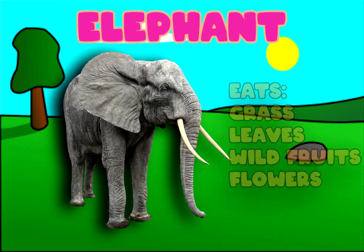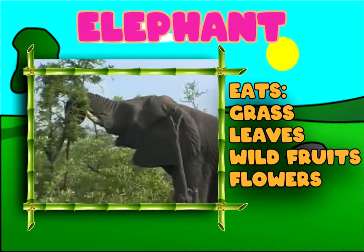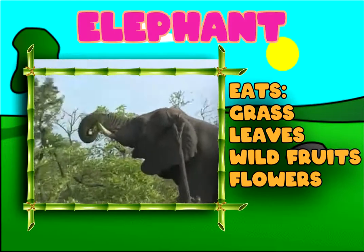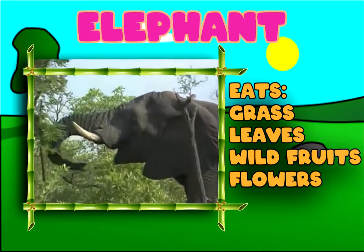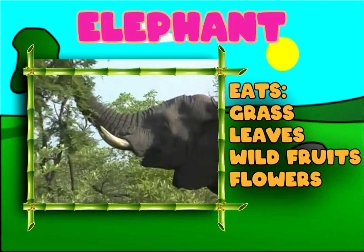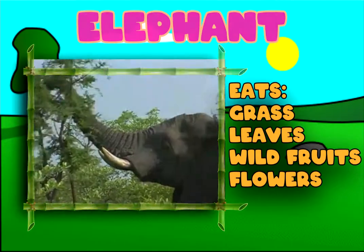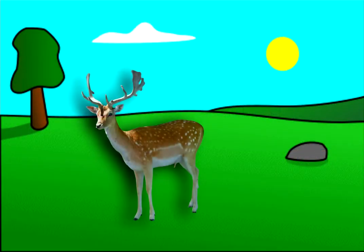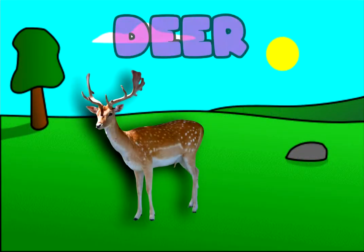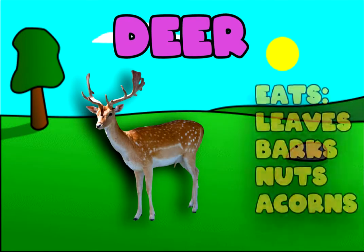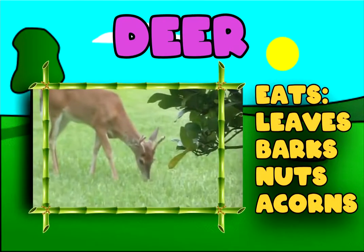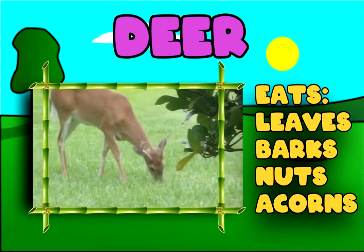Elephant. Elephants eat grass, leaves, wild fruits, and flowers. Deer. Deer eat leaves, bark, nuts, and acorns.